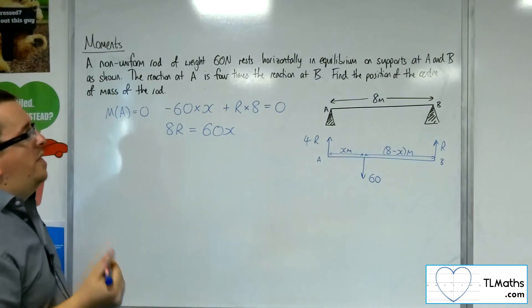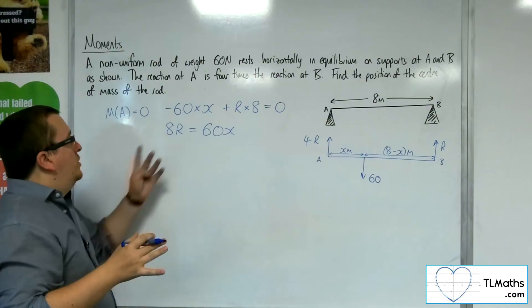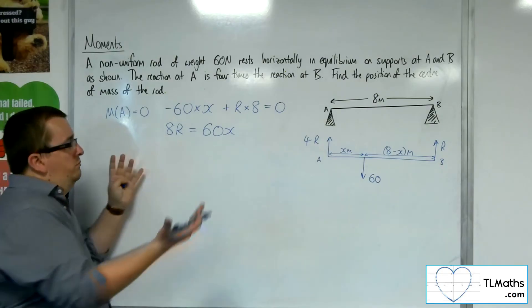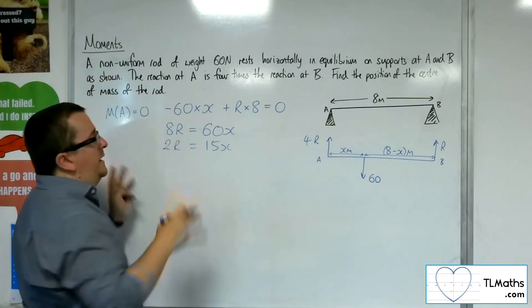So that's the situation that I've got there. That's my first equation. Now I could divide that through by 4, so 2R is 15x. I'll leave it there.